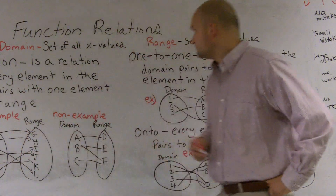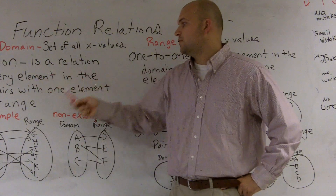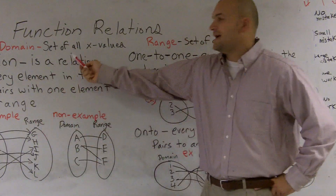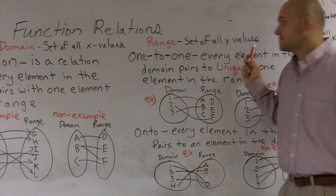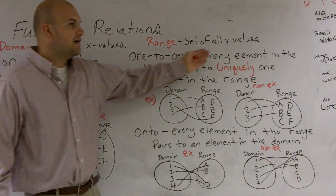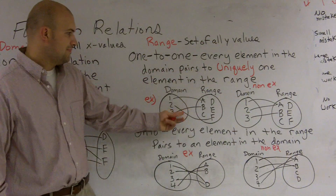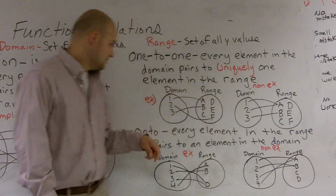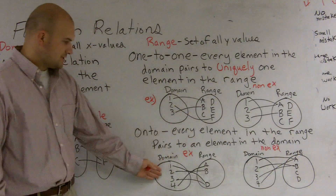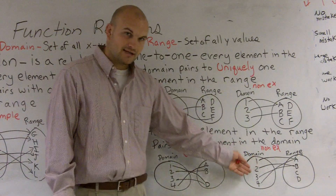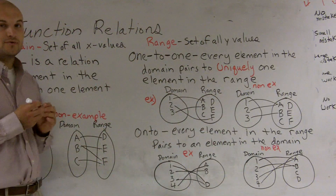So to recap: a function is a relation where every element in the domain pairs to one element in the range. Your domain is your set of all x values, your range is your set of all y values. One-to-one means every element in the domain pairs to a unique element in the range. Onto means every element in the range pairs to an element in the domain. Hopefully this helps you with your function relations.